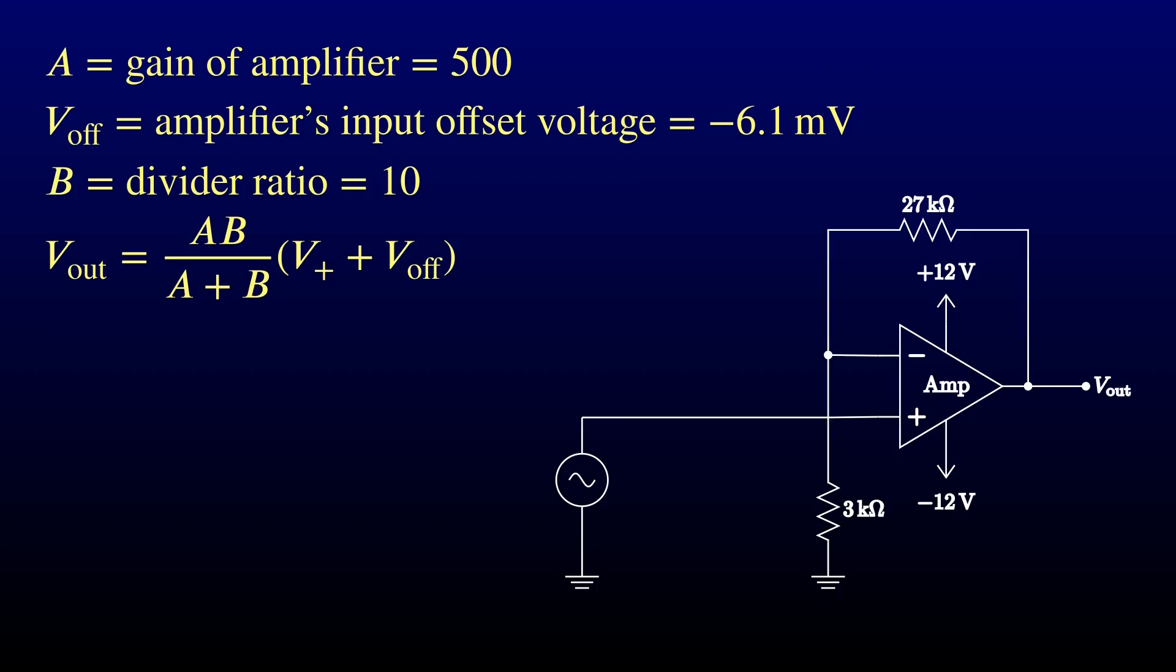This is the usual formula for an amplifier with negative feedback, a finite gain, and a non-zero input offset. But I think it will be clearer what's going on if we divide both the numerator and denominator by A. What this equation is telling us is that the circuit's gain will be the divider ratio that we programmed, divided by a correction factor for finite gain. The correction factor will be close to 1 because the term B over A will typically be small. In this circuit, it's just 1/50th, so I predict the gain will be about 9.8 rather than 10. The input offset will be multiplied by the overall circuit gain, so the 6.1 mV offset at the input will be a 60 mV offset at the output.